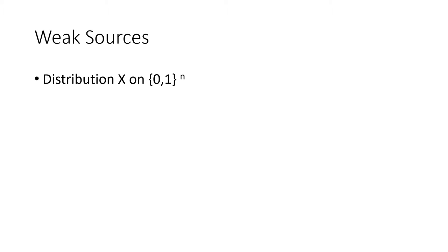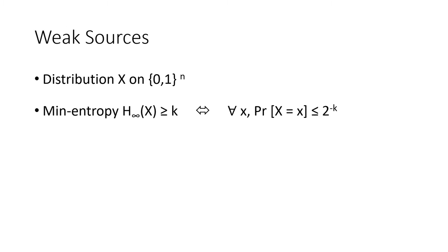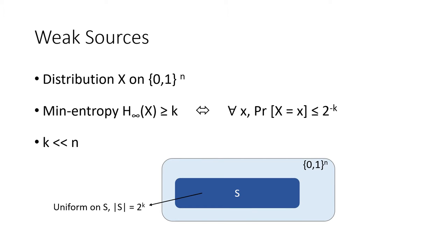Let me begin by making more precise what a weak source is. A weak source is represented by a distribution on n bits that has min-entropy k, where k is smaller than n. A min-entropy of k bits corresponds to each point in the distribution being selected with probability at most 2 to the minus k. An example of a weak source with min-entropy k is the uniform distribution on a subset of size 2^k in {0,1}^n.